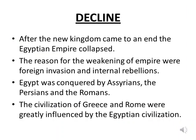The meaning of decline is downfall. After the new kingdom came to an end, the Egyptian empire collapsed due to internal rebellions — people fighting amongst each other — and foreign invasion, meaning others entering their territory forcefully. This weakened the empire, and Egypt came to be conquered by the Assyrians, Persians and Romans. As a result, the civilizations of Greece and Rome were greatly influenced by Egyptian civilization.